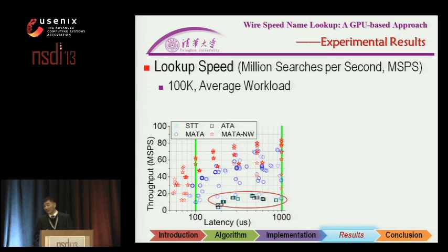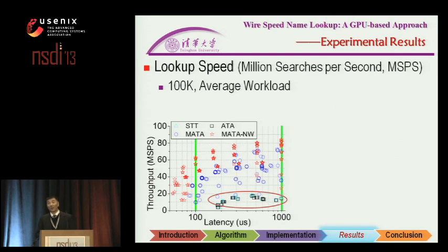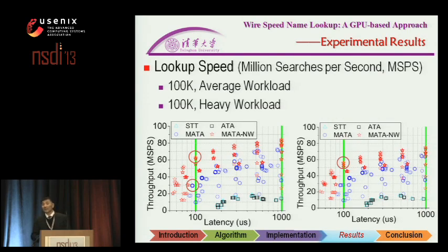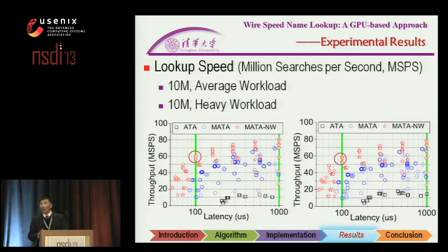We also examined lookup speed by testing a small table, comparing four approaches: STT, ATE, MATE, and MATE with interleaved mode. The first two have longer latency and lower throughput. MATE obviously improves throughput while keeping small latency. Our proposed MATE with interleaved mode greatly increases throughput further. High workload tests show similar results. Running on the large tables also shows similar behavior — MATE improves throughput significantly while keeping small latency.